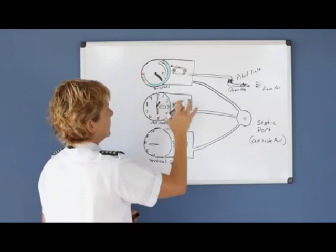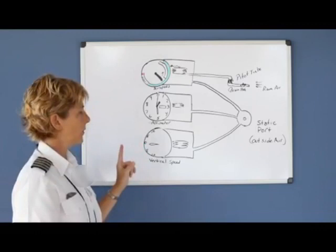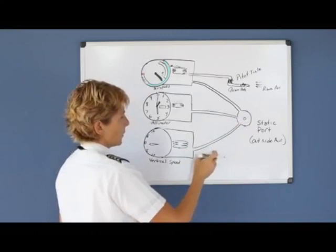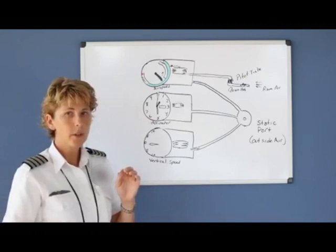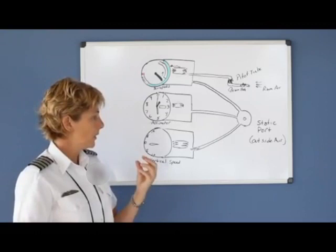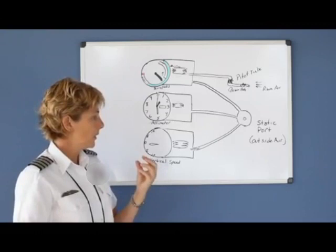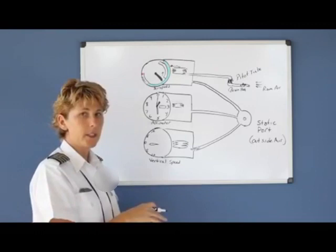Now, the vertical speed indicator works just like the altimeter, but there's one difference. Through the port that the air comes and goes as we climb and descend, there is what they call a calibrated leak or a restrictor. And because this is here, it would be the difference of you trying to breathe through a straw or you trying to breathe through a coffee stirrer. You couldn't breathe as quickly. And this restrictor, or calibrated leak, slows the passage of air down and therefore ends up showing a rate of climb or rate of descent.